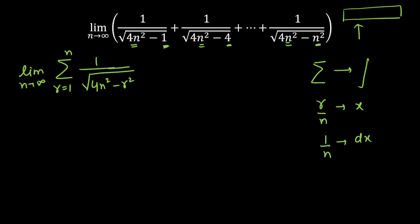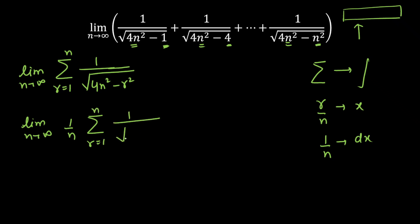First I need r/n here, so from inside the root I am going to take n outside — it will come as mod of n. Since n is positive, mod of n opens as n. So I can write this as limit n tending to infinity, and taking n² outside gives 1/n. Since n is not dependent on the summation, I can take 1/n outside. Summation r varies from 1 to n of 1 upon root over (4 minus (r/n)²).